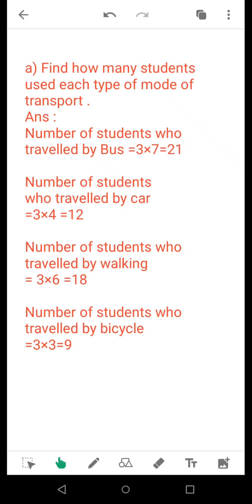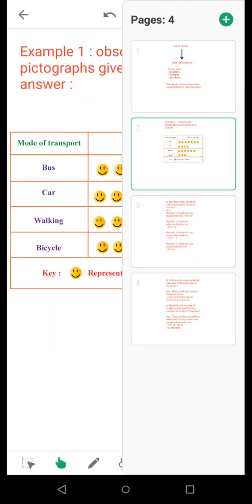As you can see, first question is find how many students used each type of mode of transport. For this question, you can calculate it from here. Seven multiplied by three, that means 21 used the bus. Four multiplied by three, that means 12 students used the car.